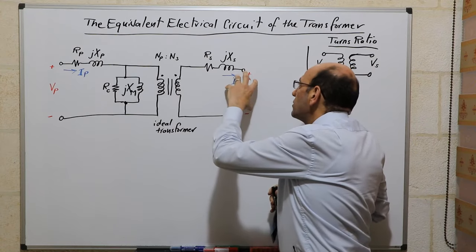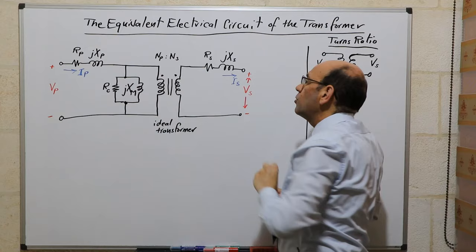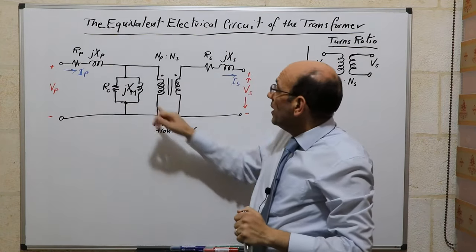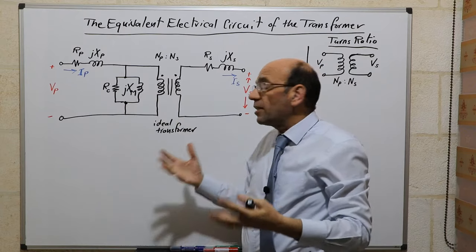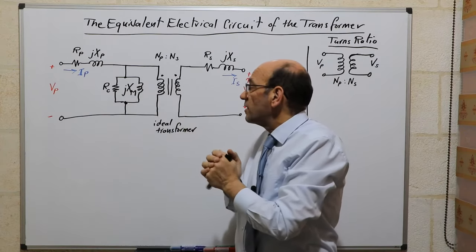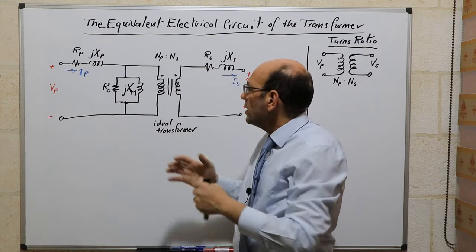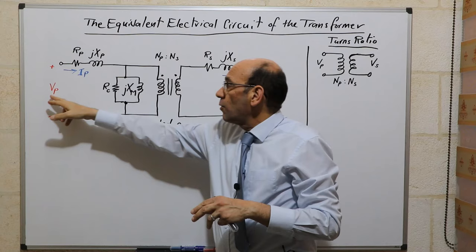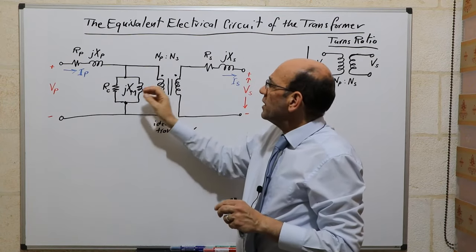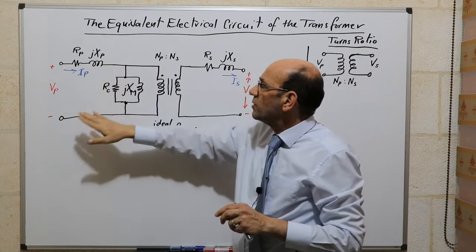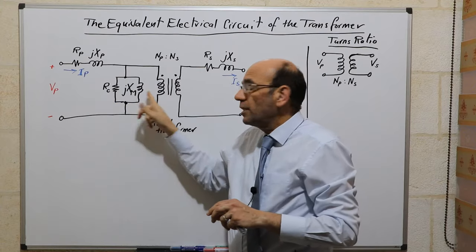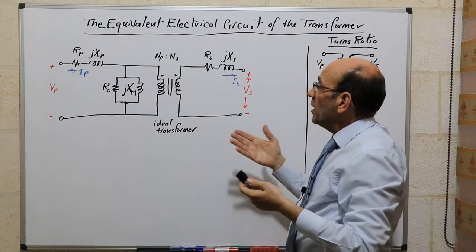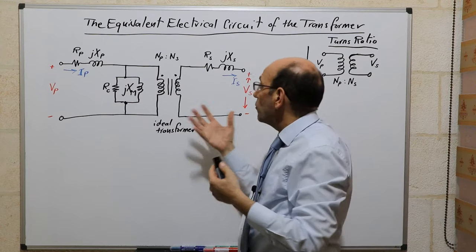You would see here, even when there's no load connected here, and this is open circuit, there's still some magnetizing current flowing in the transformer. And this component, which is an inductor, accounts or represents this magnetizing current. The magnetizing current was observed to lag the voltage by 90 degrees. The best component to represent a current lag of 90 degrees with respect to the voltage is an inductor. This completes the equivalent electrical circuit model for a single-phase transformer.